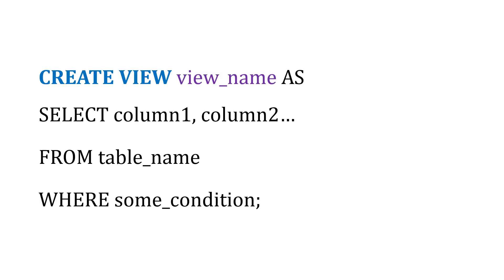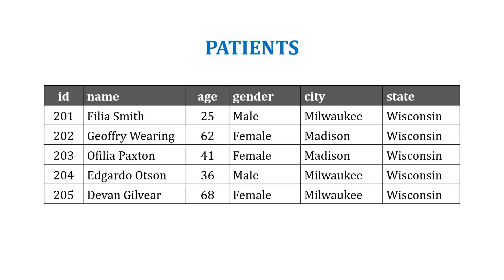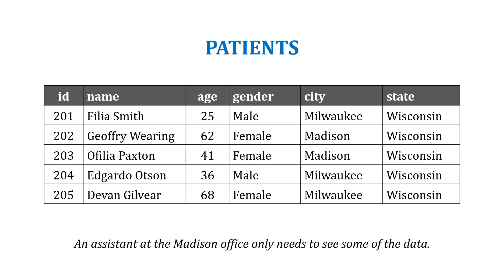Here's what the syntax looks like. We'll say CREATE VIEW, then define a view name, AS, and then include our SQL statement that subsets the table to only show what they need to see. So let's say we have a patients table with patients from Madison and Milwaukee, and an assistant in our Madison office who only needs to see some of the data — maybe only the Madison patients, and for those patients, only their name, city, and state.